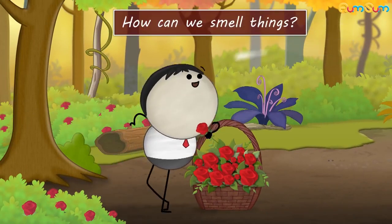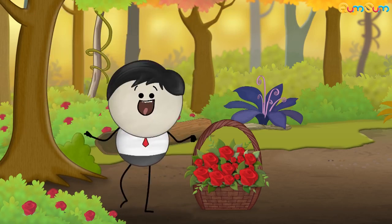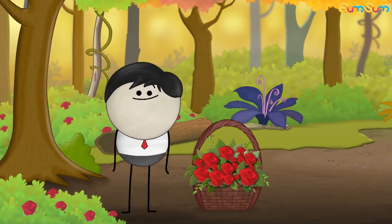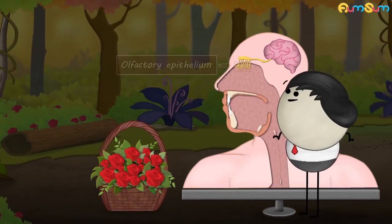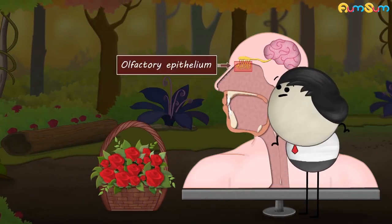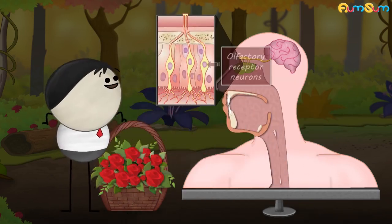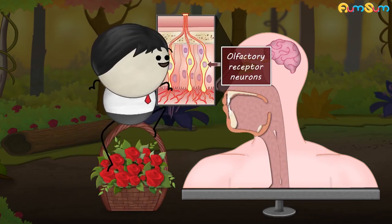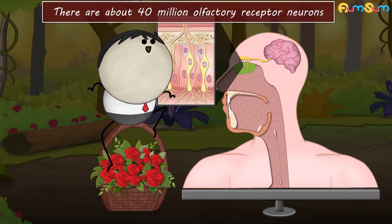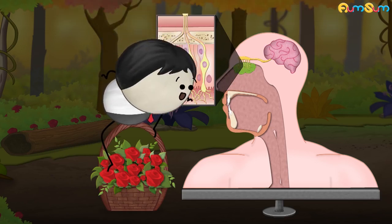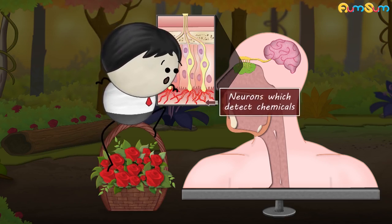How can we smell things? Dude, I don't have a nose, so how will I know? At the back of our nose, there is a tissue called olfactory epithelium. It is covered with mucus. This tissue has specialized neurons called olfactory receptor neurons. There are about 40 million olfactory receptor neurons. These neurons are chemoreceptors — neurons which detect chemicals.